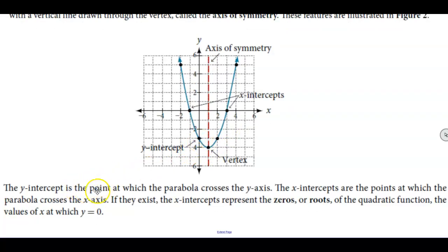Now the y-intercept is the point at which the parabola crosses the y-axis and the x-intercepts are the points at which the parabola crosses the x-axis. If they exist, the x-intercepts represent the zeros or roots of the quadratic function, the values of x at which y is equal to 0.